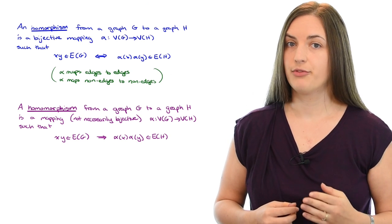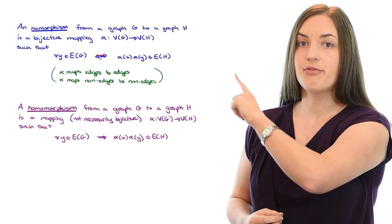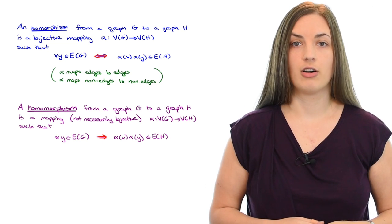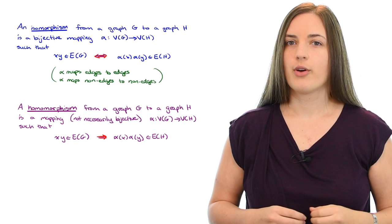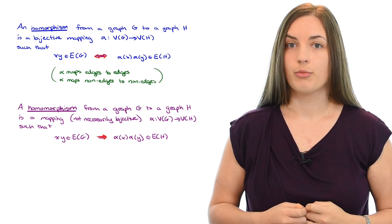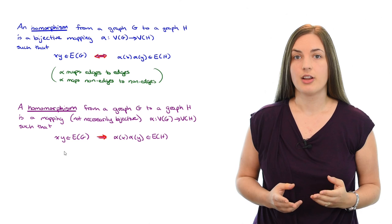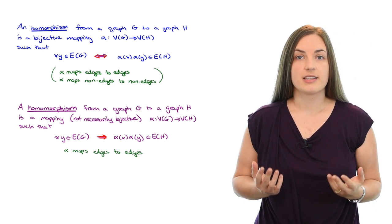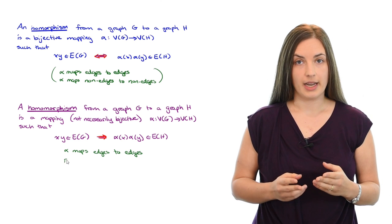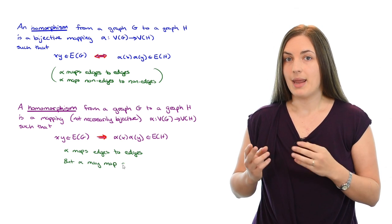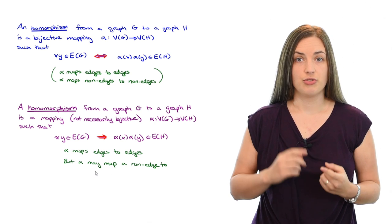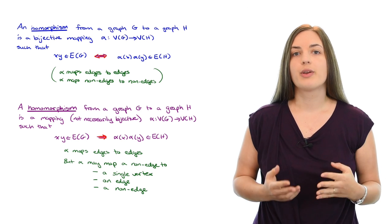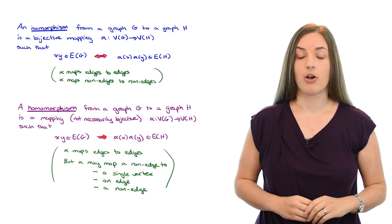Notice that the main difference between these two definitions is that the if and only if symbol has been replaced by a single directional arrow. So that's really going to come into play when we talk about examples of homomorphisms. In particular, the single directional arrow maps edges to edges, but it doesn't say what has to happen to non-edges. So alpha may map a non-edge to a single vertex, or to an edge, or to a non-edge. We don't really care what happens to the mapping on non-edges.